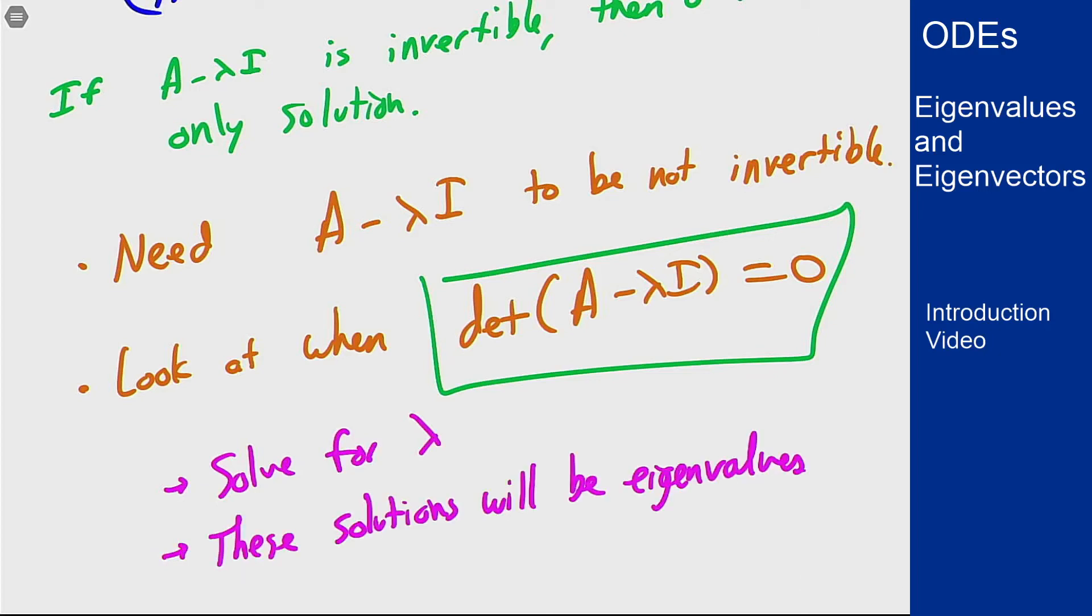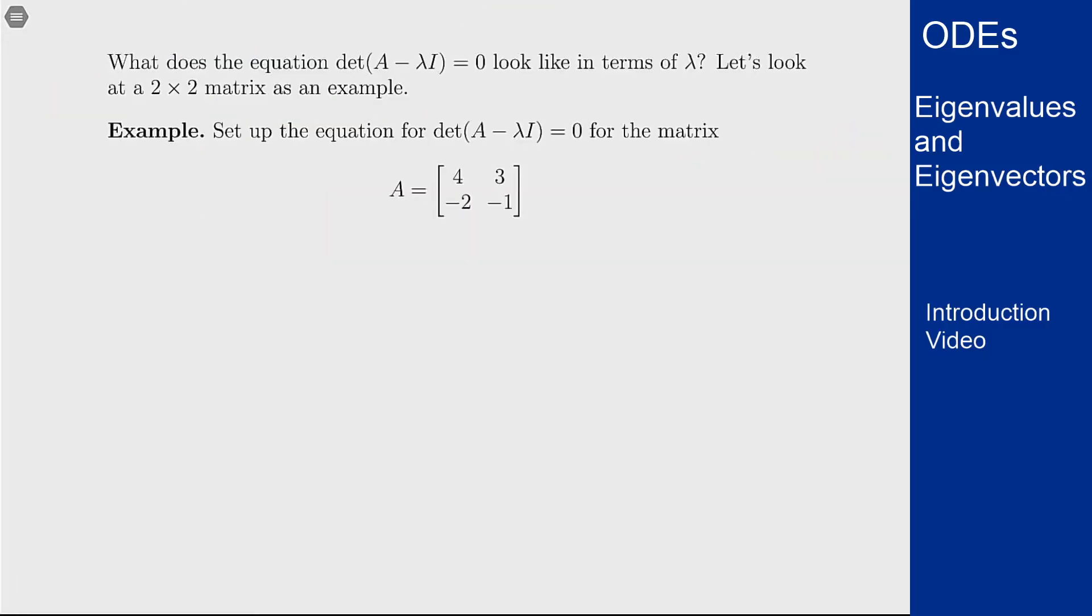So great, now we got to figure out what that equation there looks like in terms of lambda, this determinant equation, what does it look like and can we actually solve it? It turns out it's something pretty simple that we know how to deal with. Let's take a two-by-two matrix here and figure out what does determinant A minus lambda I look like for this matrix.